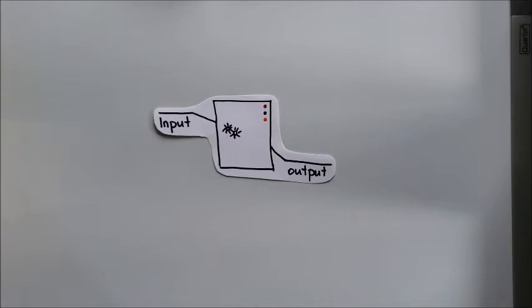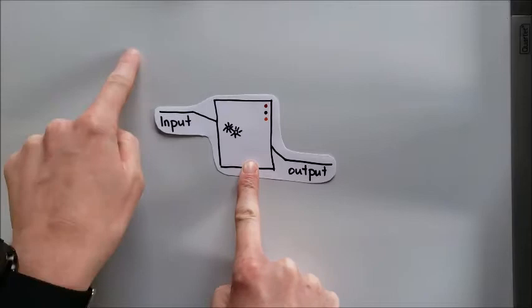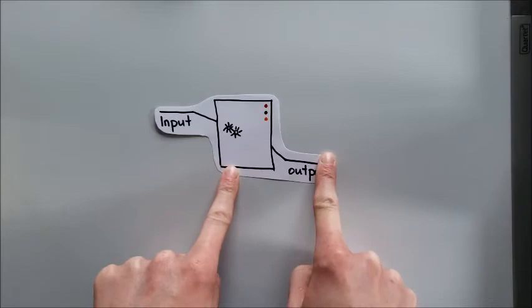Today we're going to be talking about input and output machines. The first way I like to think about input-output machines doesn't involve really math at all. This is the machine and basically what happens is I put something into this side, it does some magic in here and it spits something out.